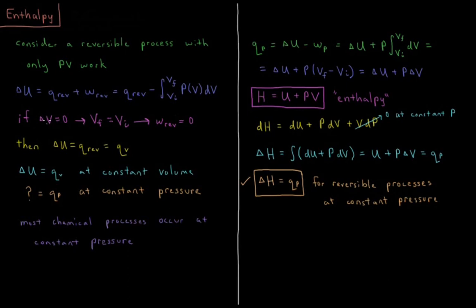If there is no volume change during a process, then the final volume equals the initial volume and the work equals zero. There's no pressure volume work if the volume of the system doesn't change. Then the change in internal energy is equal to the heat, the reversible heat that occurs in that process, or what we might label Q_V.